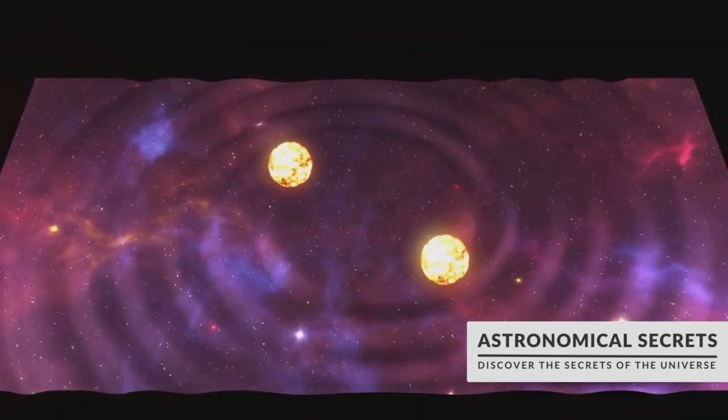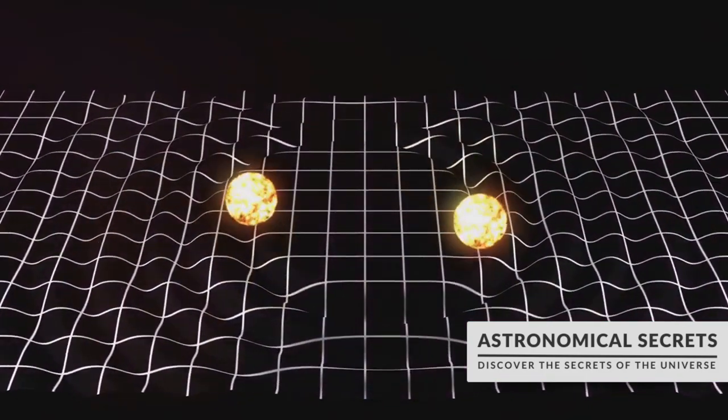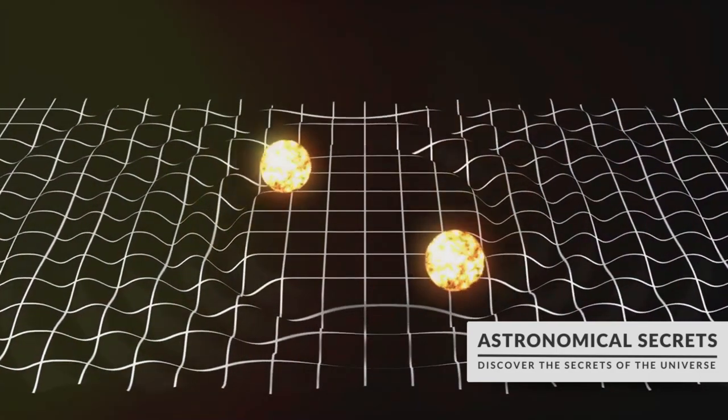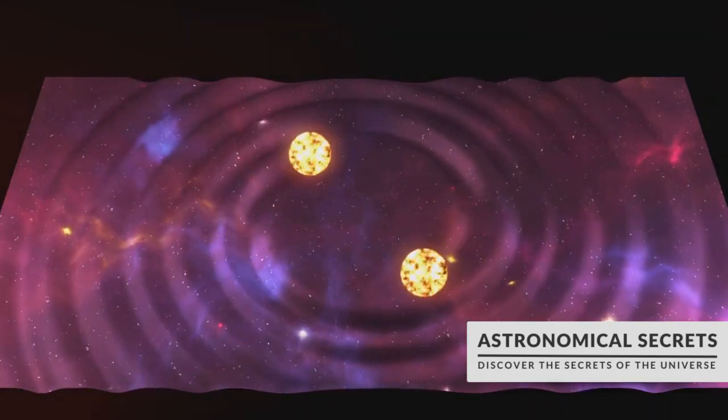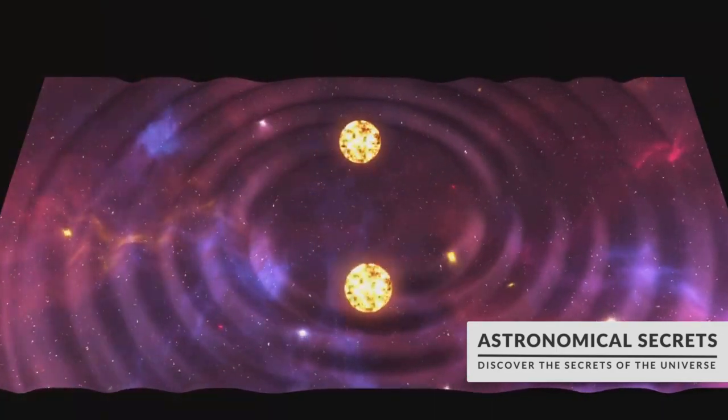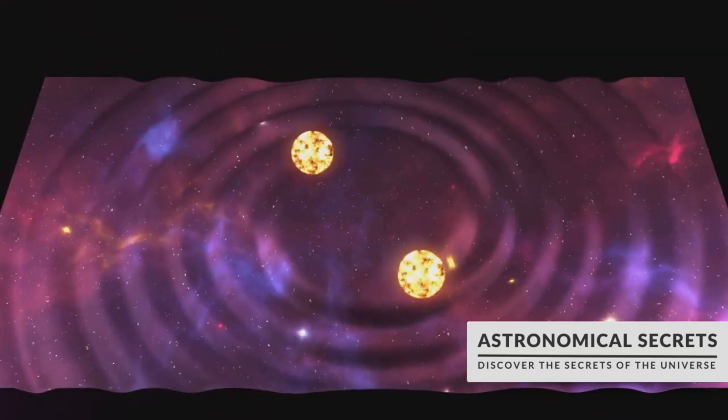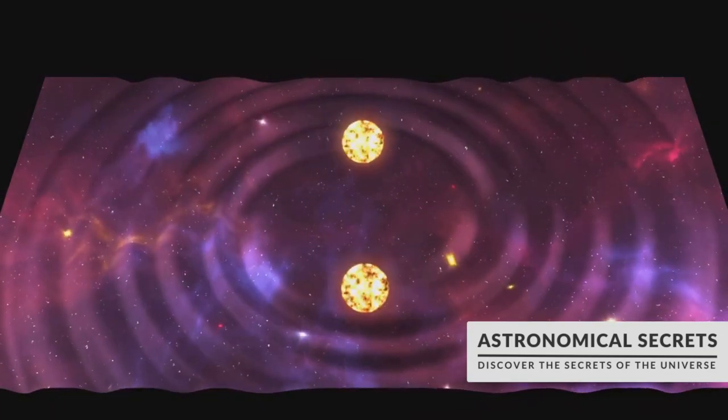Imagine if you could compress the entire human population down to the size of a sugar cube. Yes, you heard that right. All seven billion of us, squeezed into a space no larger than the tip of your finger. That's the kind of density we're talking about when we speak of neutron stars.